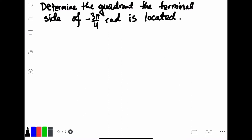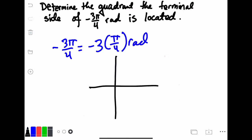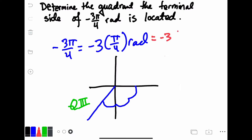In this problem I am introducing the negative. This just means we are going to move 3 pi over 4 radians in a clockwise direction. Negative 3 pi over 4 means negative 3 times pi over 4 radians, so I want to move 45 degrees, or pi over 4, 3 times in a clockwise direction — 1, 2, 3. I moved 45 degrees 3 times clockwise, and that places me right here in quadrant 3. Alternatively, you could do the math: negative 3 times 45 equals negative 135 degrees, which again places us in quadrant 3.